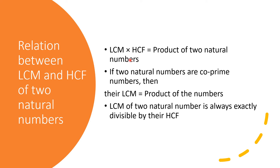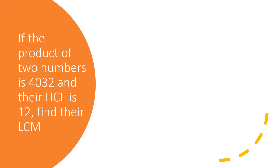Let us take the first question. If the product of two numbers is 4032 and their HCF is 12, find their LCM. Always remember: first write down what is given. Product of two numbers equals 4032. HCF equals 12.